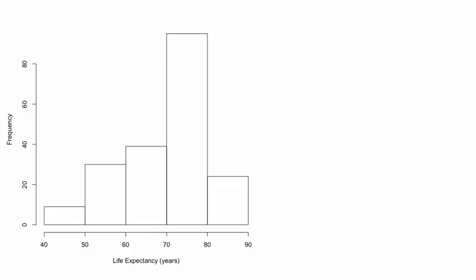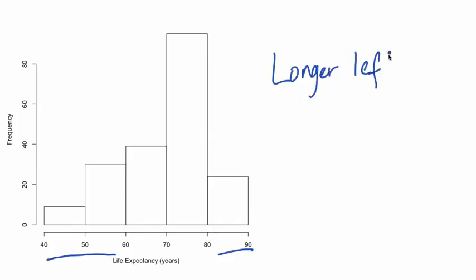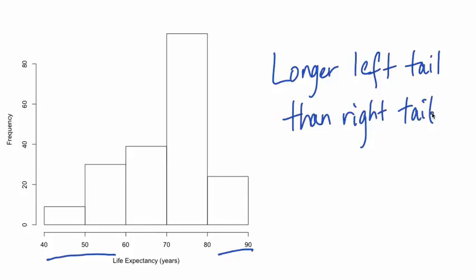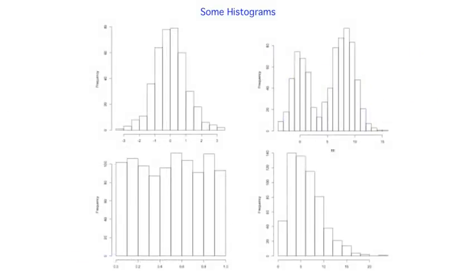The tails of a histogram are the bars in the far left and right, where the extremes of the data values are. Life expectancy has a longer left tail than right tail, corresponding to countries or territories with relatively low life expectancies. Here are a few examples of the range of shapes of distributions we can see in histograms. The histograms vary by the number of peaks, whether or not they have a peak, how symmetric they are, and how long the tails are relative to each other.